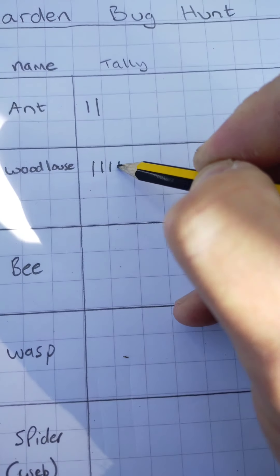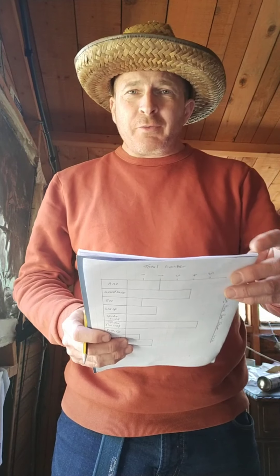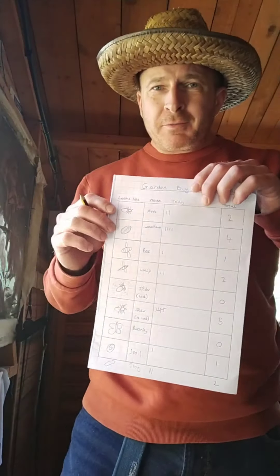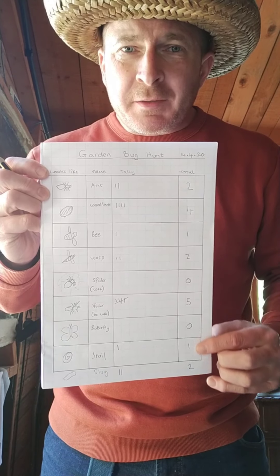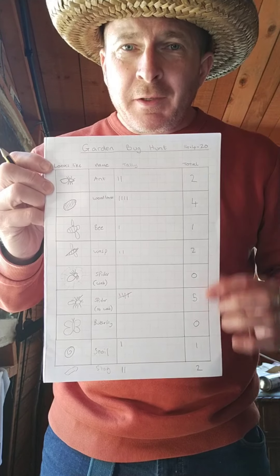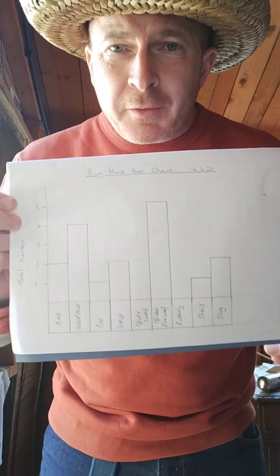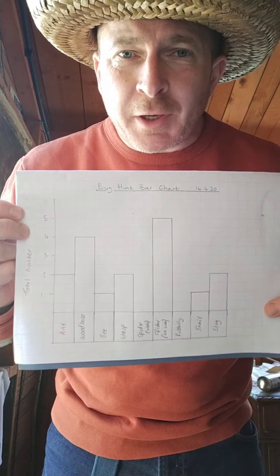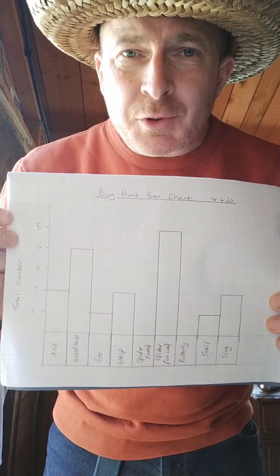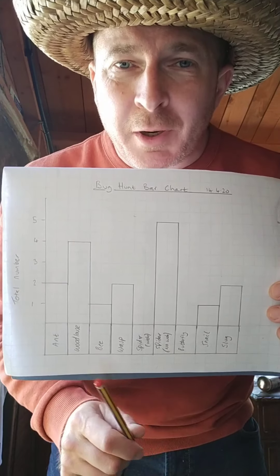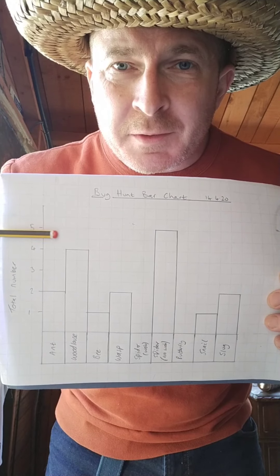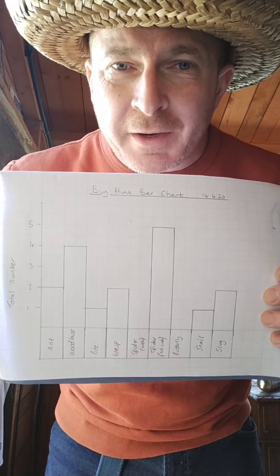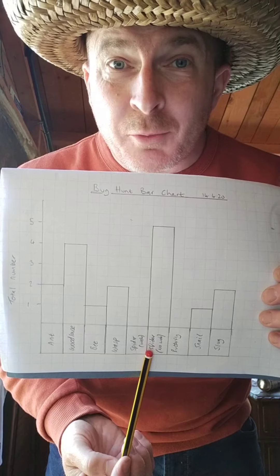One, two, three, four. Right, that's my hunt around the garden done. I've added up the tallies and using that information I've gone on to make a bar chart. I'm sure you can download these things off the internet but I quite enjoy doing this myself. The thing I've got most of in the garden — if you look at the scale on the side — I saw five spiders without webs.